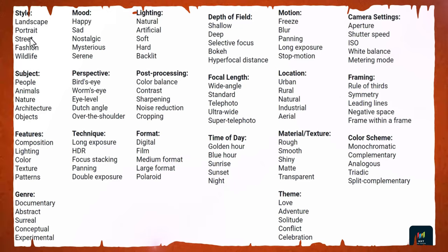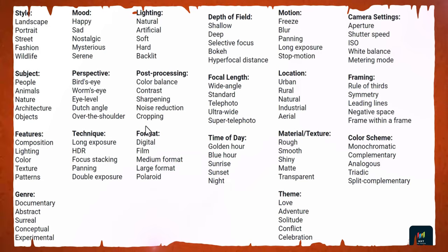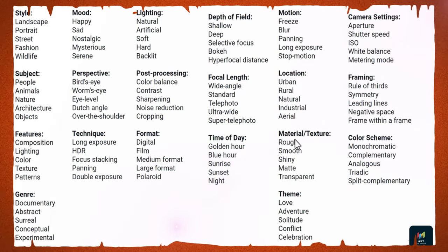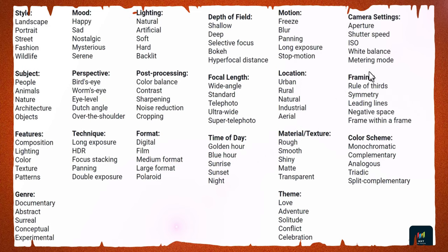Here is a comprehensive collection of prompt elements you can add: style/subject features, genre, mood, perspective, technique (HD, focus tracking, panning, double exposure), lighting, post-processing (color balance, contrast, sharpening, noise reduction), format, depth of field (shallow bokeh), focal lengths, time of day, motion (blurry, long exposure), location (urban, rural), material/texture, theme (love, adventure), camera settings, formatting, and color scheme — including monochromatic for single-color photographs.